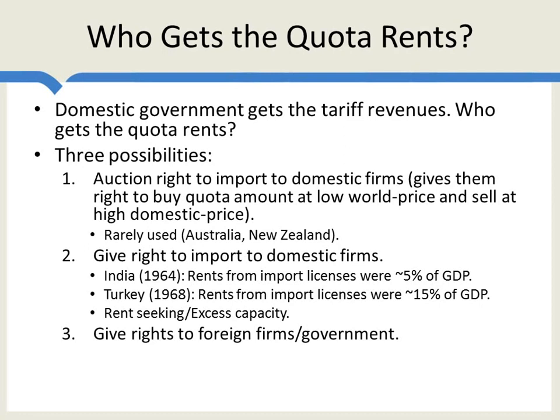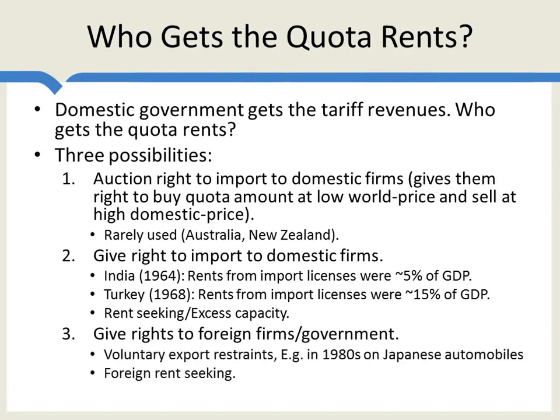The third option, which is often done, is to give the rights not to domestic firms but to foreign firms or governments. This was done by the Reagan administration in the 1980s under the so-called voluntary export restraints, under which Japanese automakers voluntarily agreed to send fewer cars to the United States.